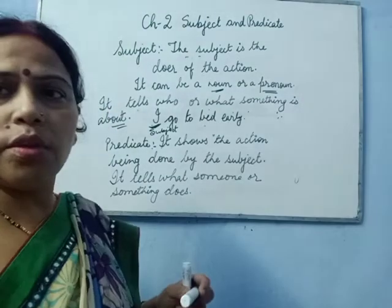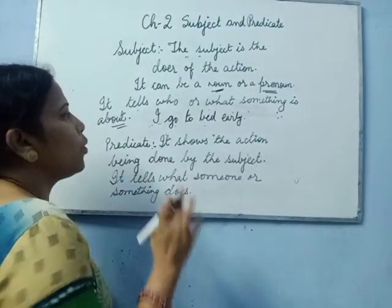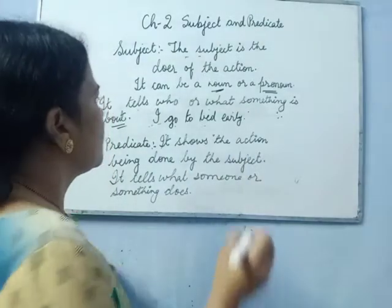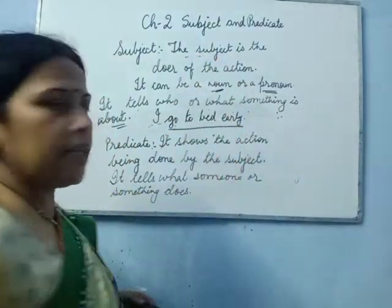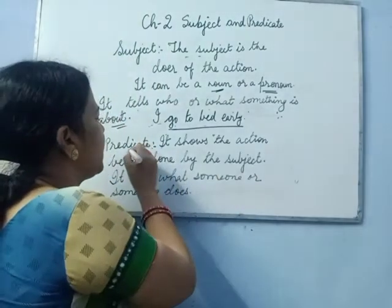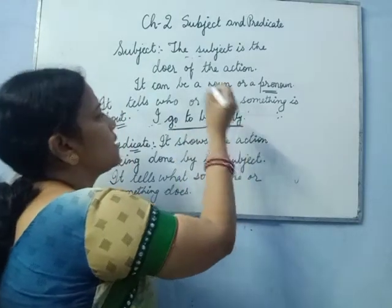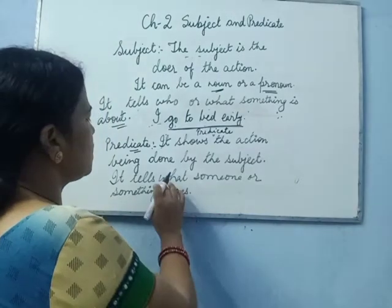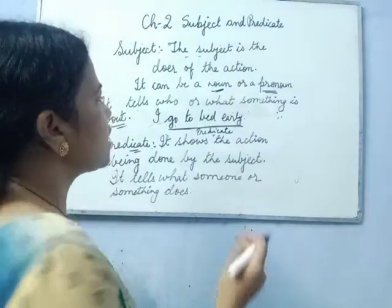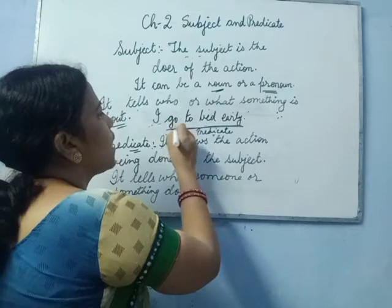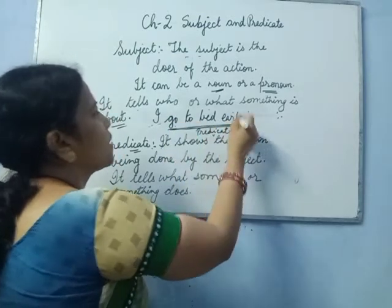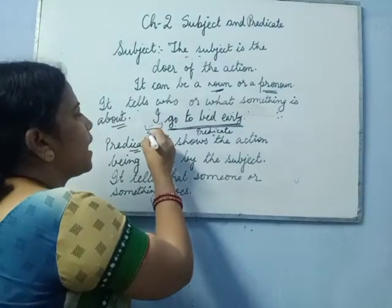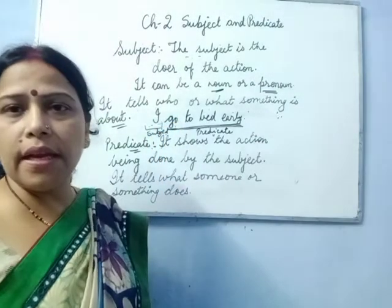Now we will understand what is a predicate. Taking the same sentence — 'I go to bed early' — the predicate shows the action being done by the subject. The action being done is 'go to bed early.' The predicate tells us what someone or something does. So 'I' is the subject and 'go to bed early' is the predicate.